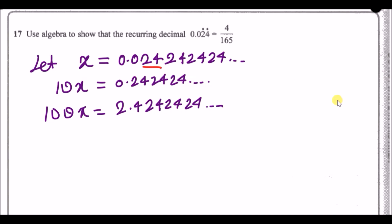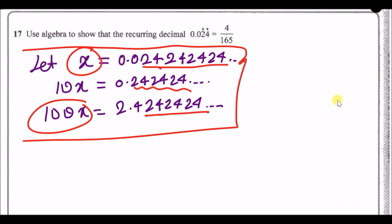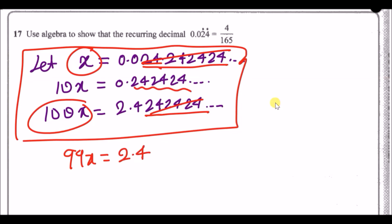The digits in 100x and x line up — both have '24' repeating from the same decimal place. The 10x version doesn't line up properly, so subtract 100x − x = 99x. The long repeating decimals cancel, leaving 99x = 2.4. Solve: x = 2.4/99. Verify on a calculator and you get exactly 4/165.